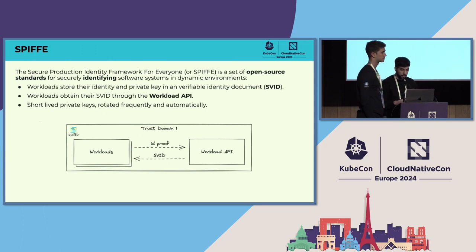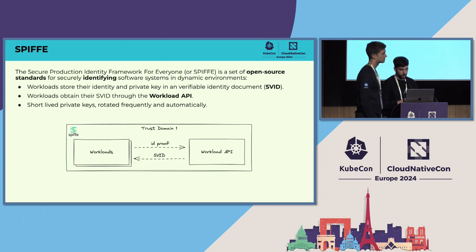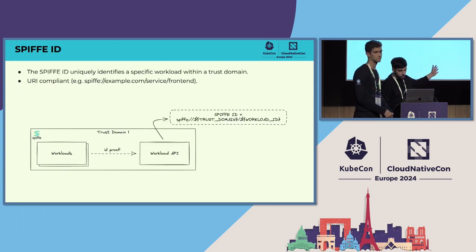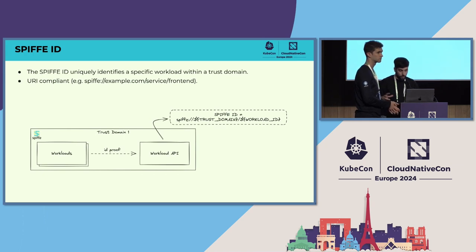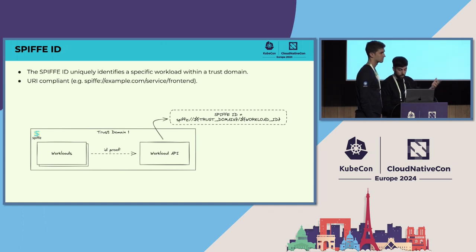There are several concepts involved in the SPIFFE architecture. The first one is the Workload API, which is in charge of generating a document called an SVID — a verifiable identity document. Workloads use SVIDs to establish MTLS communications, because inside the SVID we put a SPIFFE ID. The SPIFFE ID identifies a specific workload within a trust domain. For example, a cluster will be the trust domain. The SPIFFE ID is URI-compliant and contains the trust domain and the workload ID.